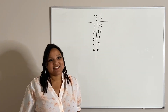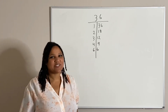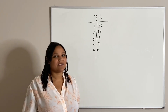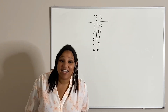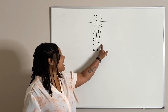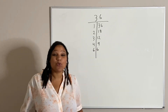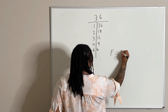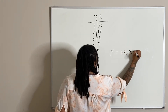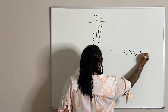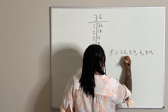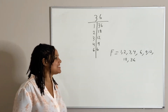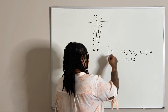How about seven? No, seven doesn't work. How about eight? No, eight doesn't work. What about nine? Well, we have a repeat — nine is already on the board. We can stop. So our factors — thank you for helping me find my factors — we have one, two, three, four, six, nine, 12, 18, and 36.